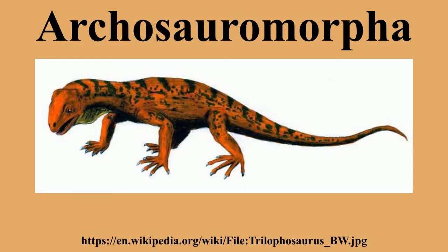In a later publication, Michel Loren defined Archosauromorphia as the clade containing the most recent common ancestor of Prolacerta, Trilophosaurus, Hyperodapedon, and archosaurs and all its descendants. David Dilkes formulated a more inclusive definition, defining it as the clade containing Protosaurus and all other saurians more closely related to Protosaurus than to Lepidosauria.